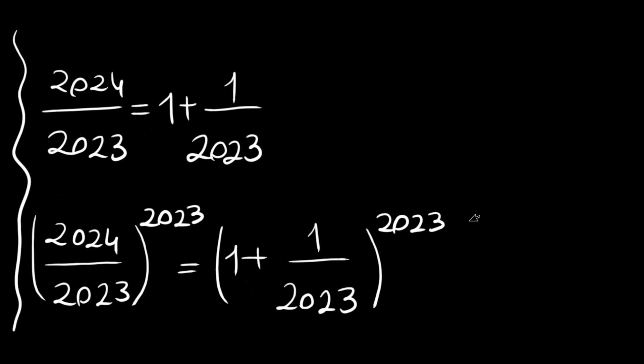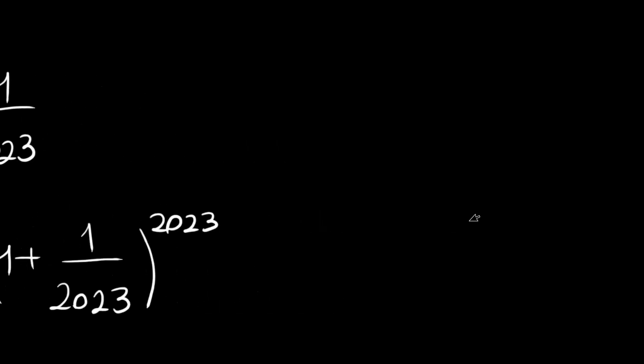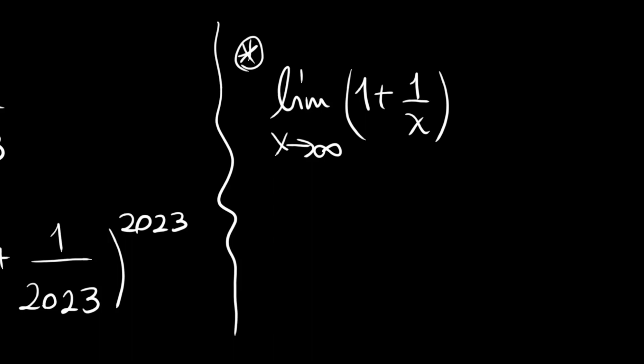Let's remember some rule, some limit actually. If x approaches infinity, this (1 plus 1 over x) to the power x is equal to Euler's constant e, which is approximately